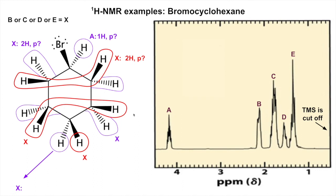What about these hydrogens? This one sees two neighbors over there, one there, and one there - that's five neighbors total. So these guys are a two-hydrogen sextet.